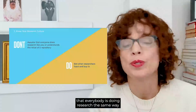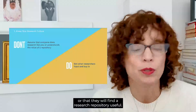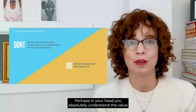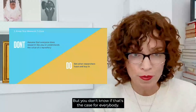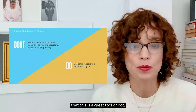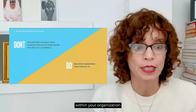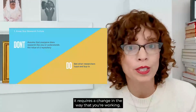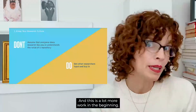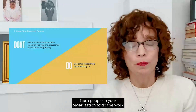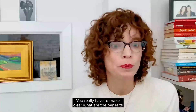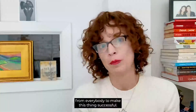Number one: knowing your research culture. You cannot assume that everybody is doing research the same way you might be doing it, or that they will find a research repository useful. You have to reach out to other researchers within your organization and get them to buy in on this process. As mentioned, it requires a change in the way that you're working — a lot more work in the beginning — so it's really going to require commitment from people in your organization to do the work before they see the benefits. You can think of this as a sort of grassroots activism that needs to take place throughout your organization.